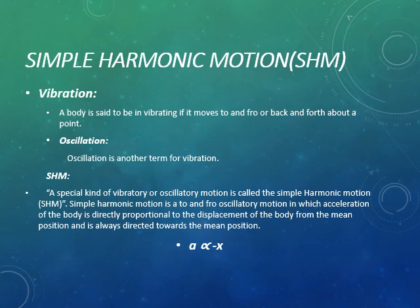So what is simple harmonic motion? Simple harmonic motion is a to and fro oscillatory motion in which the acceleration of a body is directly proportional to the displacement of the body from the mean position and is always directed towards the mean position. The mathematical formula for simple harmonic motion is: acceleration is directly proportional to displacement.